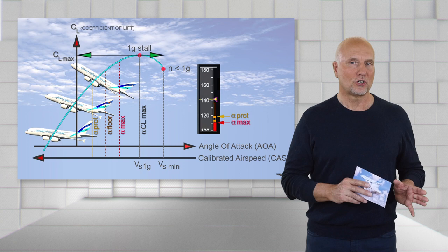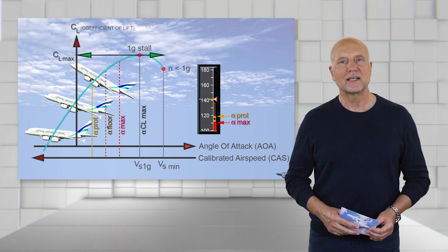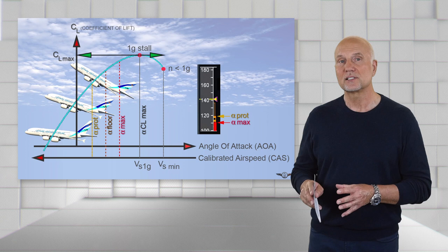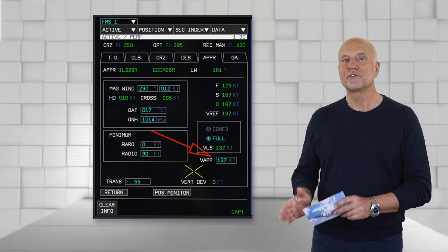All speed values we have talked about are computed by the PRIMS and displayed on the PFD. The FMCs are calculating the speed values as well and compare its calculation with the PRIMS throughout. This approach provides redundancy, but the system architecture still gives the flight crew the authority to change values, i.e. like overwriting the approach speed on the approach panel of the MFD performance page.